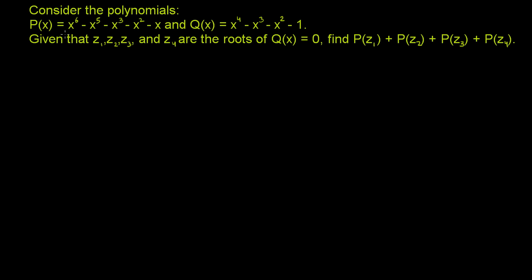Consider the polynomials. P(x) is equal to x to the sixth minus x to the fifth minus x to the third minus x squared minus x. And Q(x) is equal to x to the fourth minus x to the third minus x squared minus 1. Given that z1, z2, z3, and z4 are the roots of Q(x) equals 0, find P(z1) plus P(z2) plus P(z3) plus P(z4).